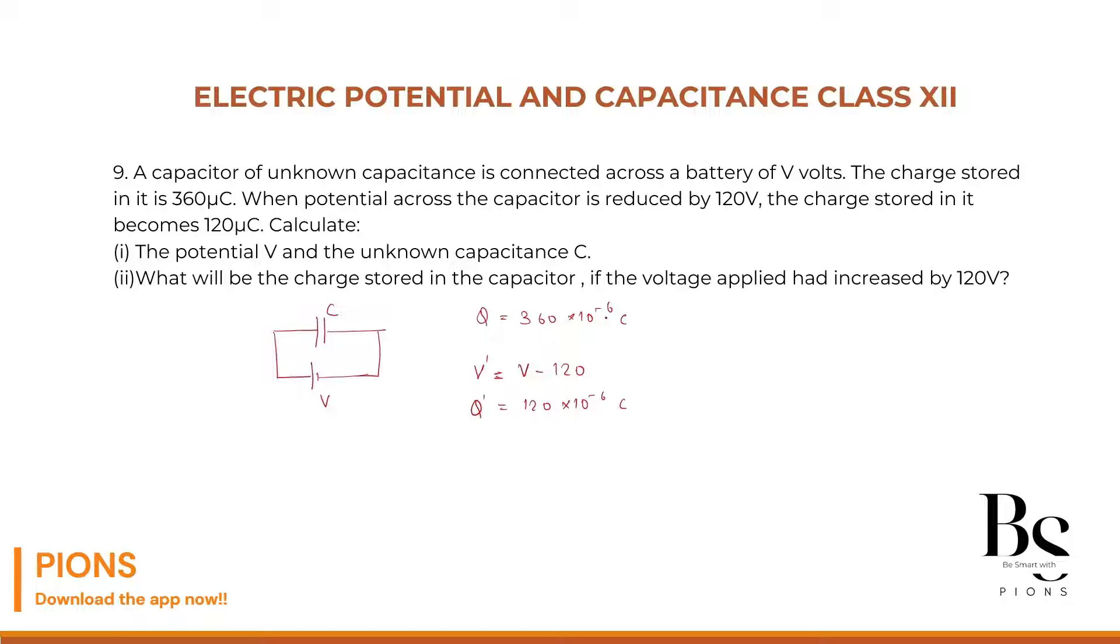I got another battery whose voltage is less than the initial battery by 120 volt. If it is so less, the charge it will store will be obviously less. But when you are reducing the voltages, the charge reduces. Keeping what constant? Capacitance.